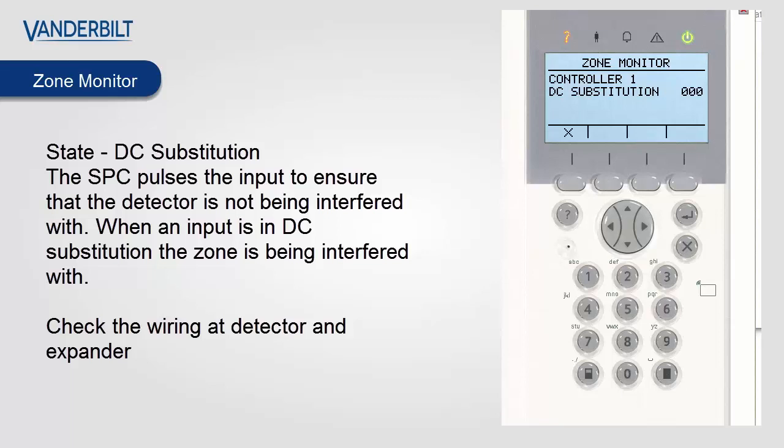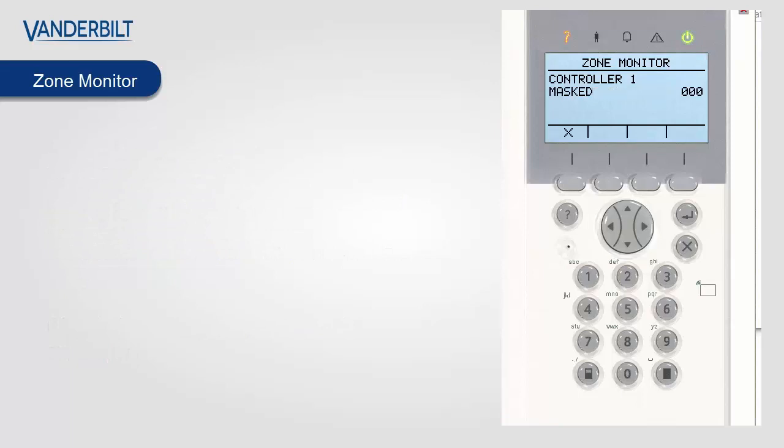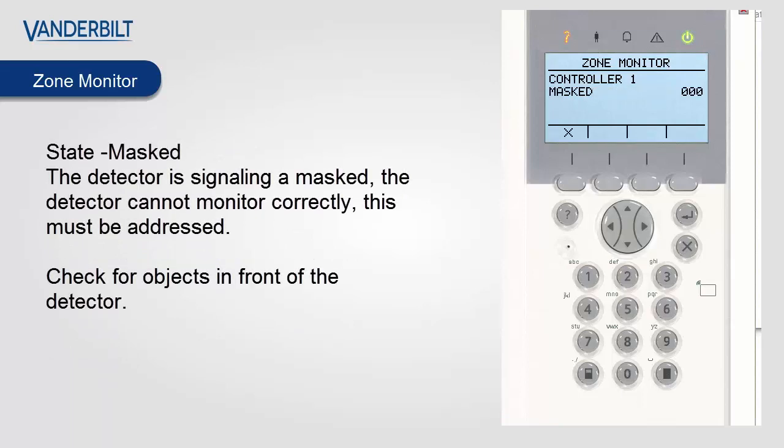State DC substitution: the SPC pulses the input to ensure the detector is not being interfered with. When an input is a DC substitution, the zone is being interfered with and replaced with a DC source. Please check the wiring of the zone to identify this interference. Zone state mask: the detector is signalling a mask condition, meaning the detector cannot monitor the situation correctly and this must be addressed. Check for objects in front of the detector and remove them in order to reset the mask condition.